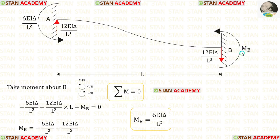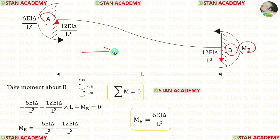Now, I am going to find out MB. For that, I am going to take moment about B from point A. In this case, I am moving towards the right-hand side.